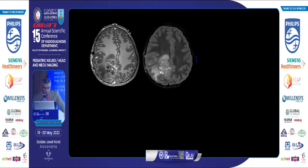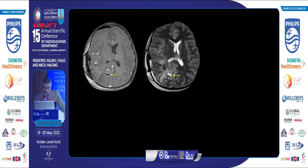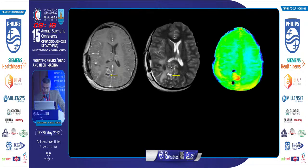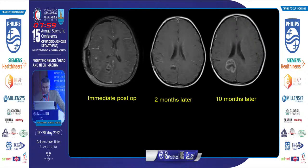A young patient with Ewing's sarcoma developed a brain metastasis showing high signal on amide proton transfer. Post-operative MRI revealed abnormal enhancement at the operative bed, and amide proton transfer demonstrated high signal consistent with tumor residual. The neurosurgeon was not convinced and requested conventional MRI follow-up. At two months and eight months, the lesion had evidently increased, confirming the initial diagnosis of tumor residual by amide proton transfer.